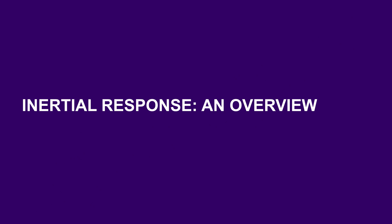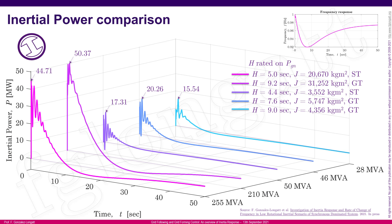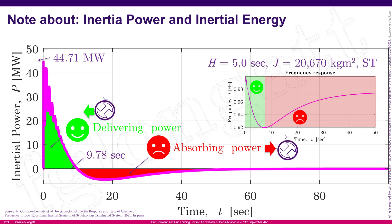Inertia response is the active power contribution that a synchronous machine delivers during an under-frequency event. The machine releases kinetic energy from the rotor, reducing speed while producing more active power — a positive contribution during under-frequency. However, during the recovery period, the machine starts to absorb power. When mimicking inertia response in power converters, this absorbing or recovery period must be carefully considered.